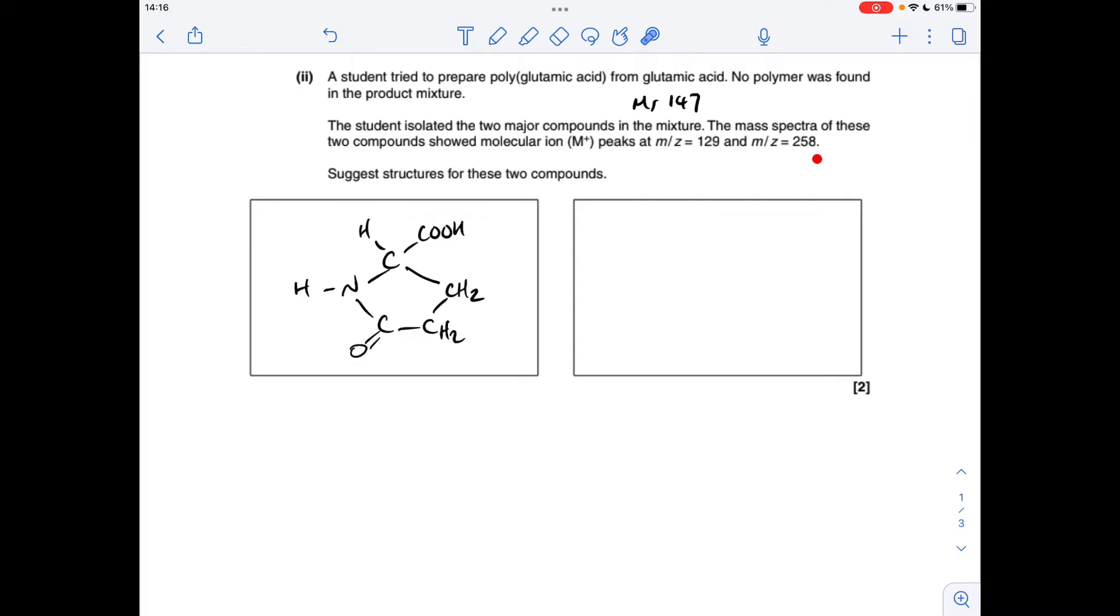So if we move on to the 258 now—how can we get to 258 from 147? Well, if we take two of these, two 147s, and then subtract from that 36, we're going to generate this 258. So what must have happened: two glutamic acids have lost two water molecules.